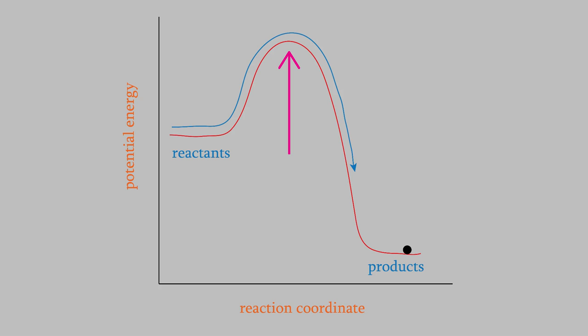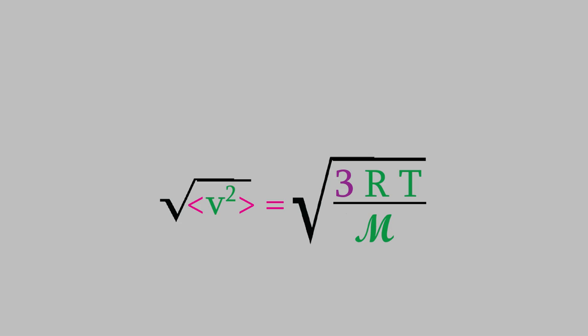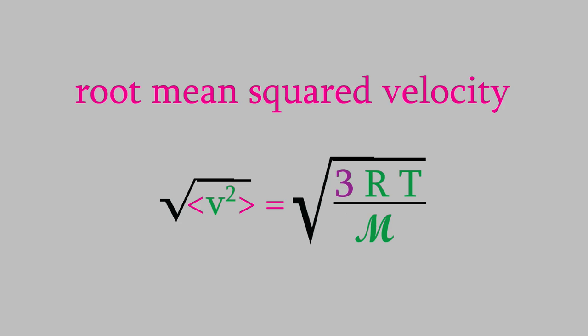You might recall from the previous video that we had this equation for the root mean squared velocity of the molecules. But remember, this velocity is determined using an average of the squared velocity. It doesn't tell us anything about what the range of likely velocities is. So, how can we determine what the distribution of velocities is?